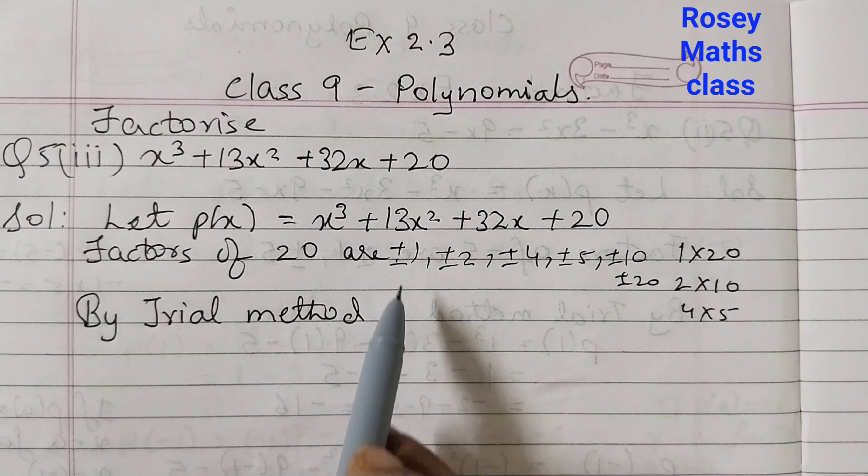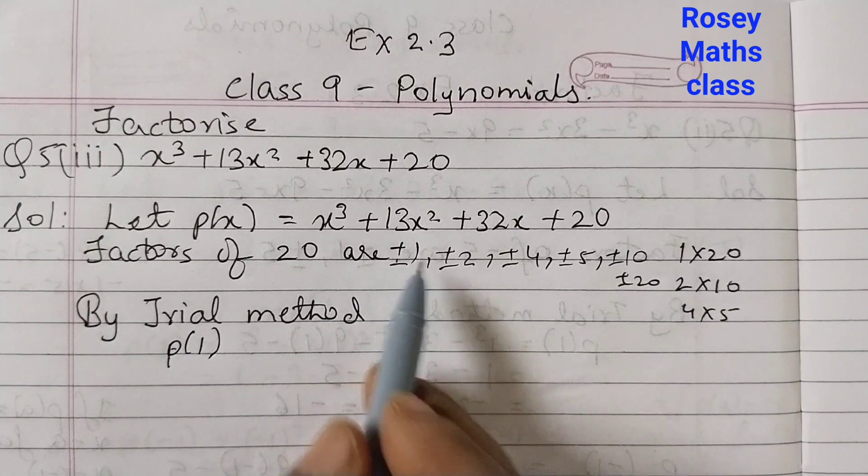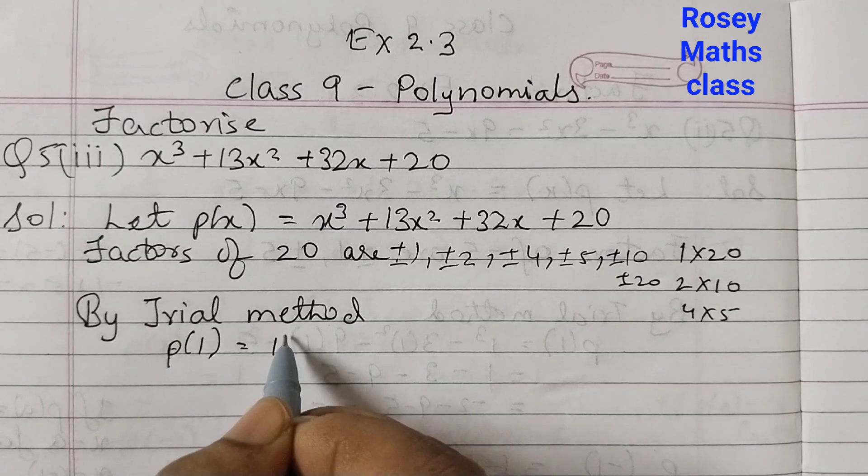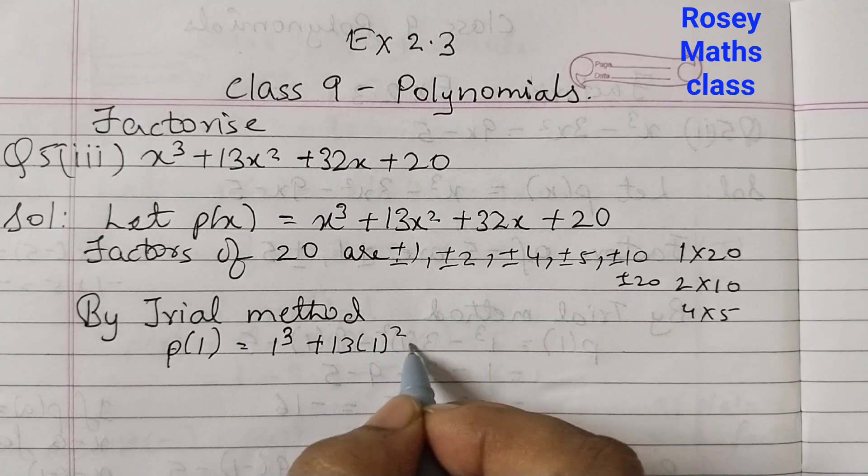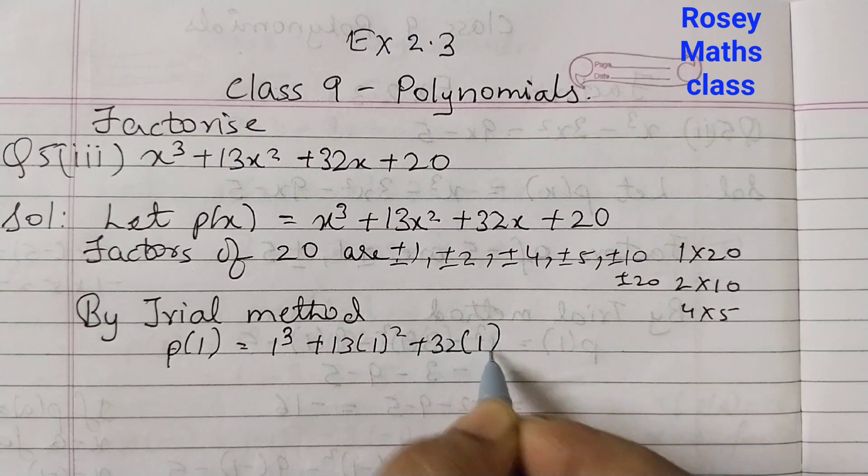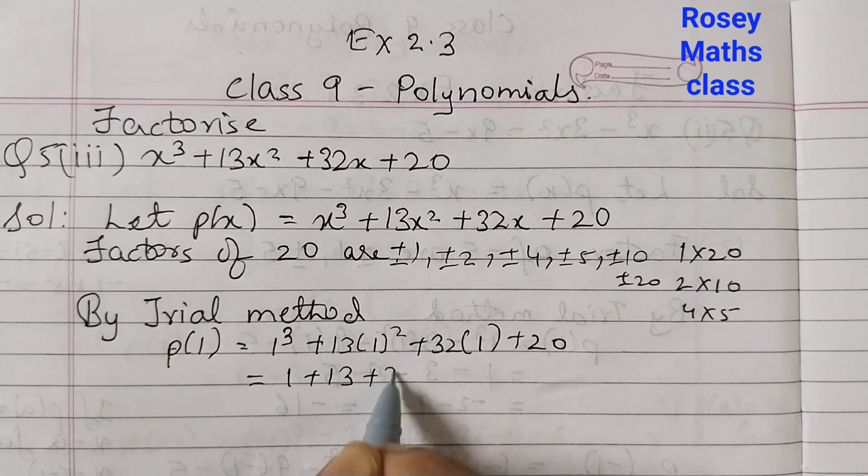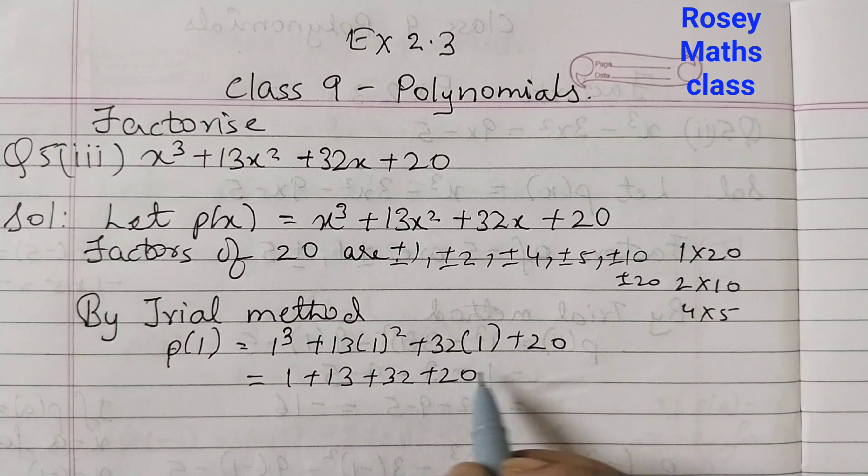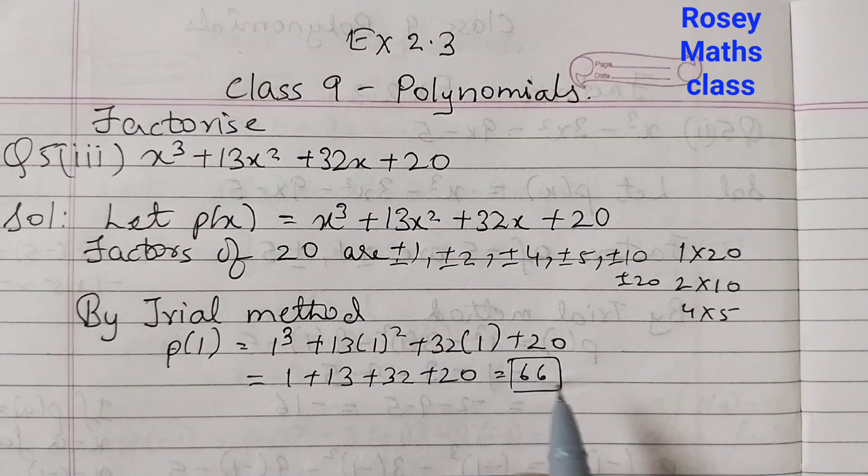Now by trial method we will see which factor gives us 0. First find out p(1). We always start with p(1). Replace x by 1: 1³ + 13(1)² + 32(1) + 20. Simplify this: 1 + 13 + 32 + 20 = 66. We are getting 66, not 0.